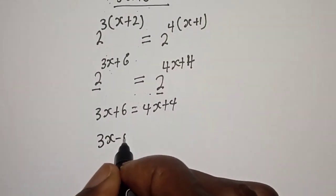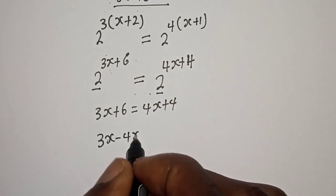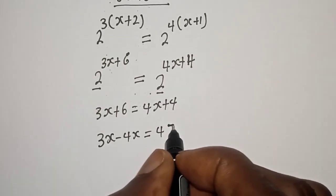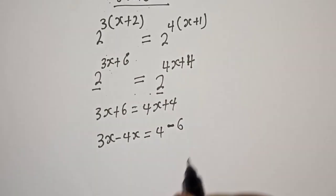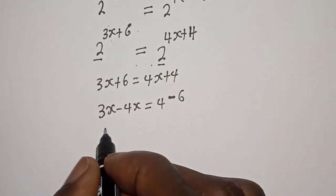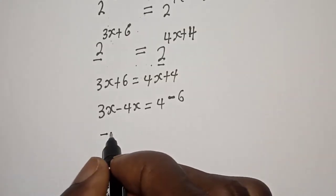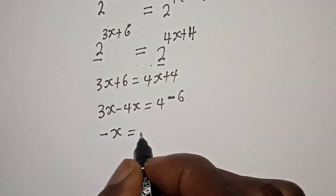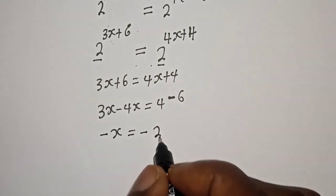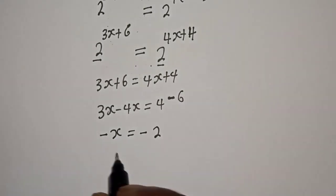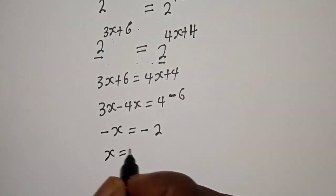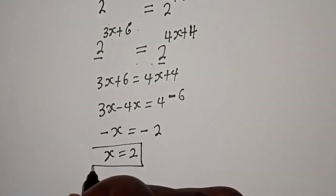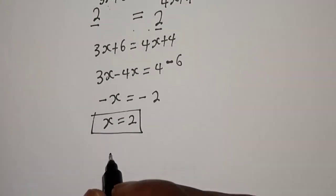3s minus 4s is equal to 4 minus 6. That gives us negative s is equal to negative 2, so s is equal to 2. This is the final answer. We can check to confirm if our answer is right or wrong.